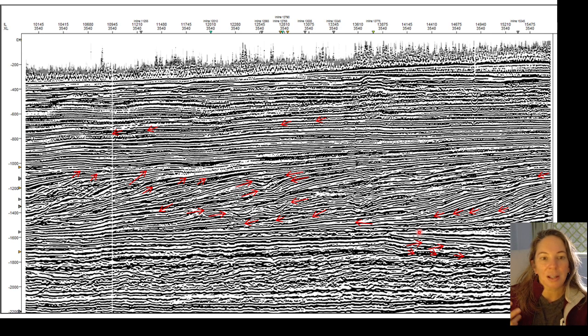Because we can now see the on-lapping, the down-lapping, the top-lapping, all those sequence stratigraphic features that we're looking for a lot more easily in the cosine of instantaneous phase.